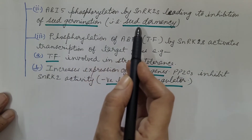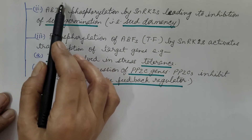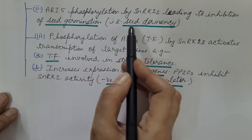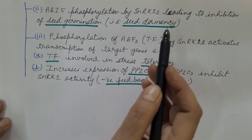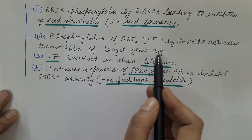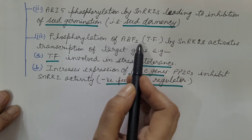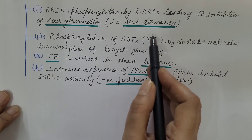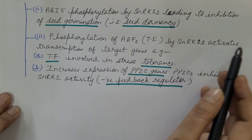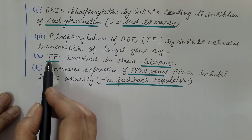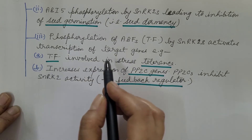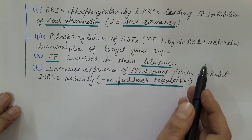Second, SnRK2 phosphorylates ABI5, which leads to inhibition of seed germination — that is, seed dormancy — during unfavorable conditions. Third, phosphorylation of ABFs (transcription factors) by SnRK2s activates transcription of target genes. The activated ABF binds to the promoter region of ABA-inducible genes and leads to their transcription. For example, transcription factors involved in stress tolerance are transcribed, resulting in stress tolerance of plants under unfavorable conditions.